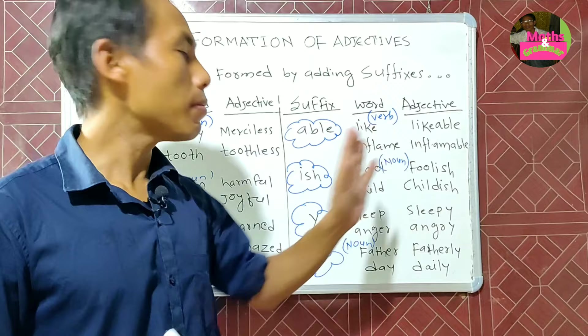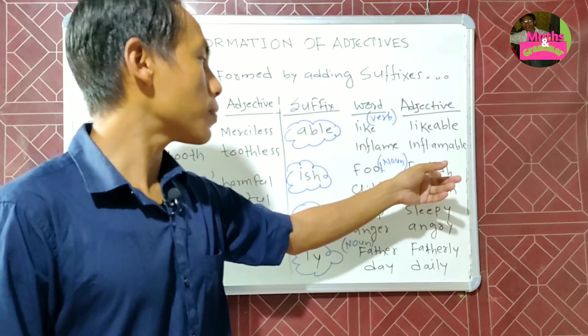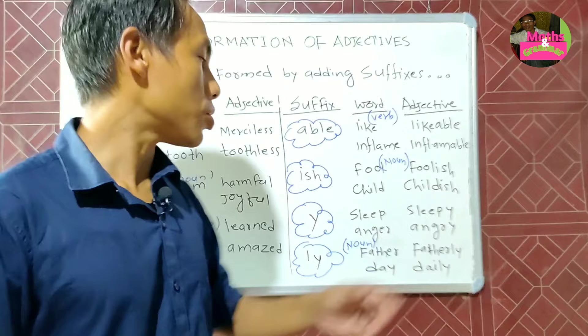Again, a noun becomes an adjective with the help of the suffix '-ish.' So 'fool' becomes 'foolish,' and 'child' becomes 'childish.'